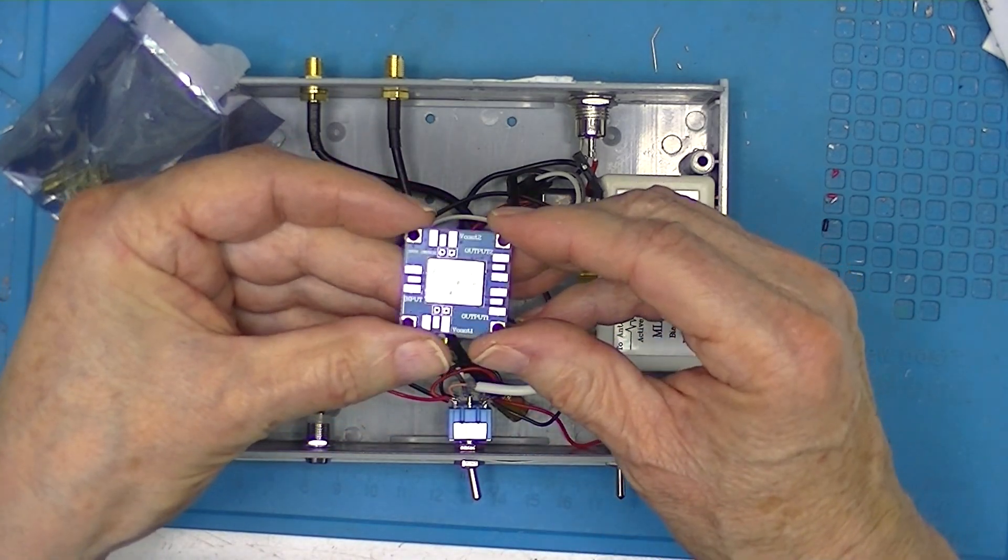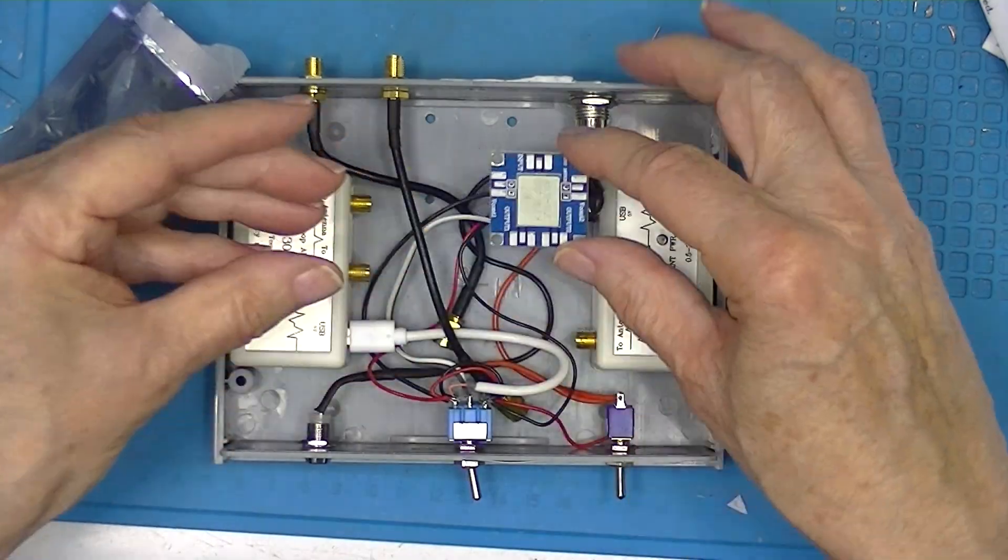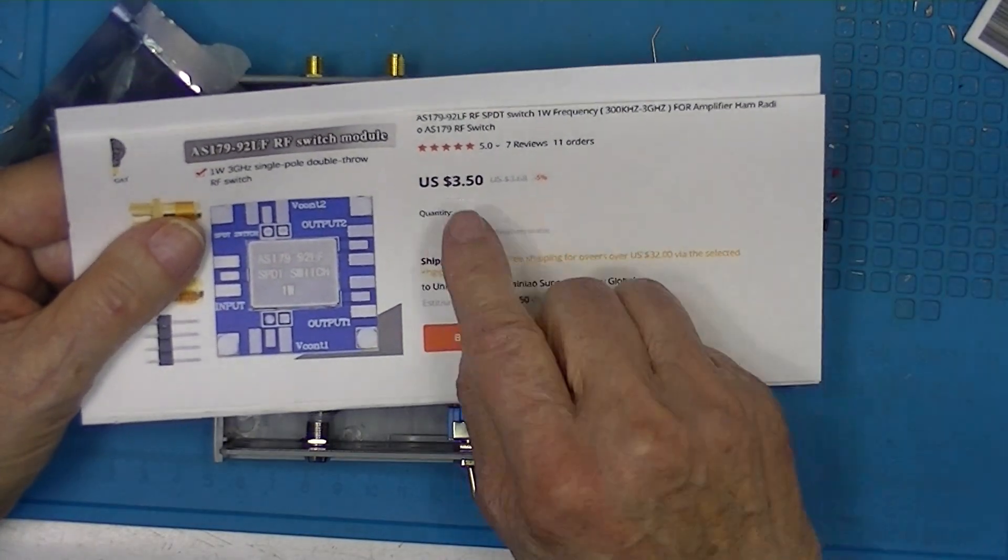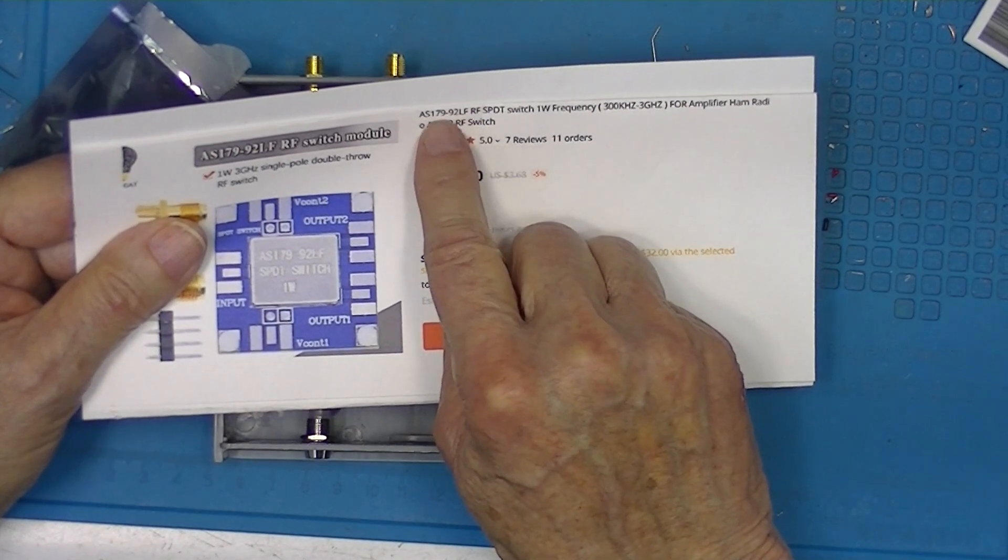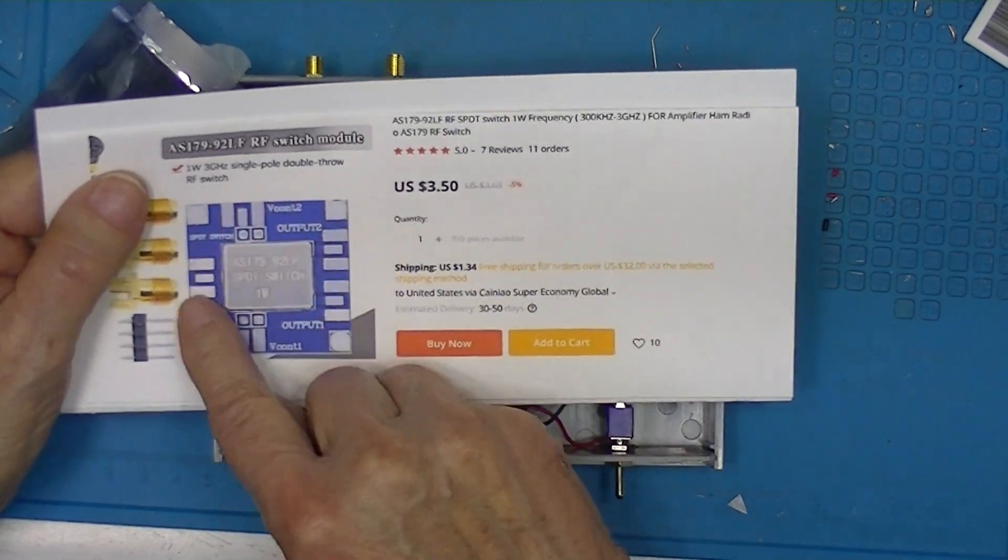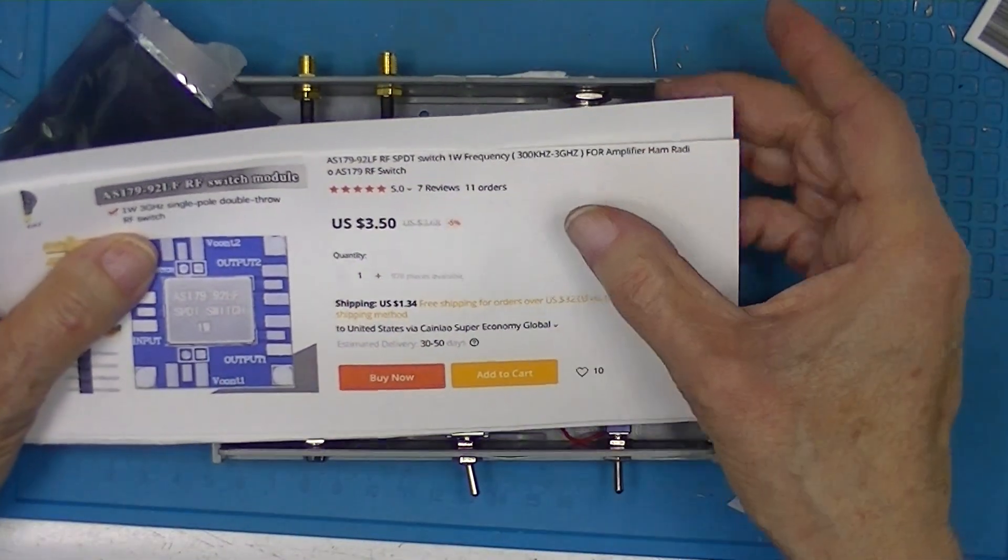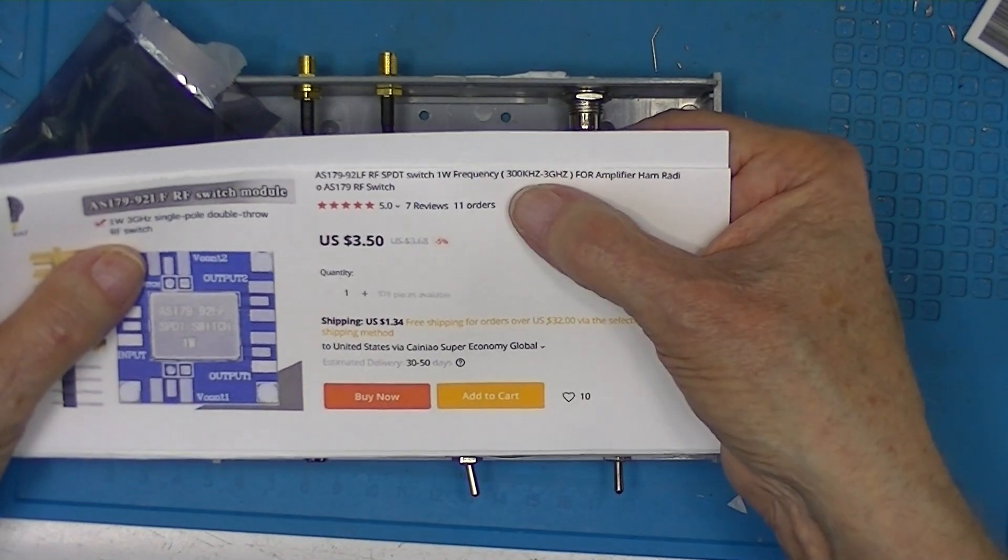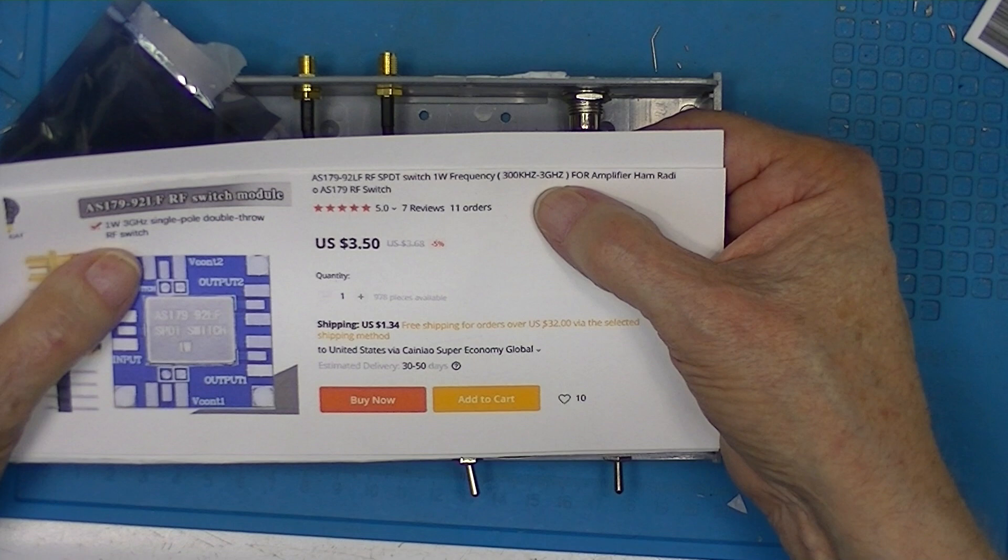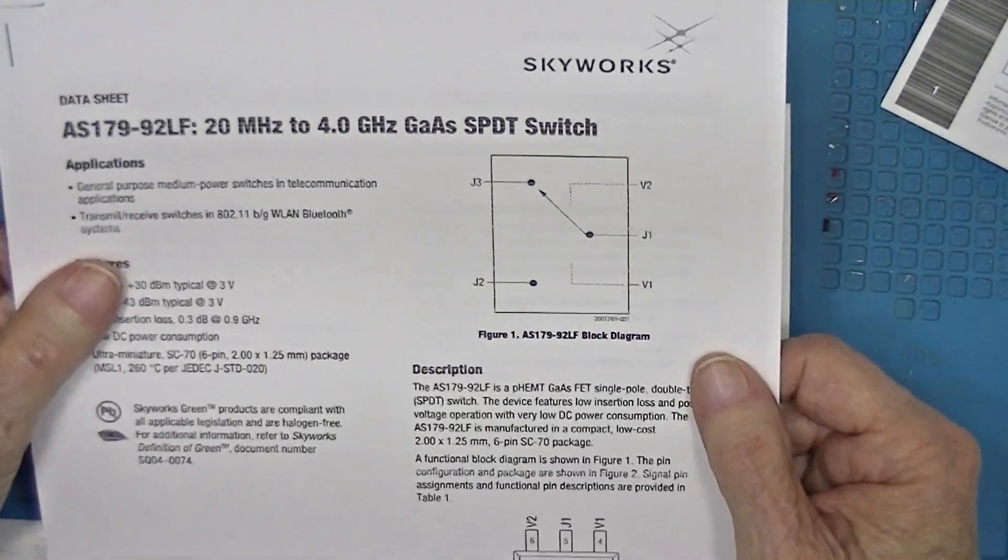It looks about the same, physically a little bit smaller in all dimensions. Banggood says this has a frequency response of 300 kilohertz to 3 gigahertz.